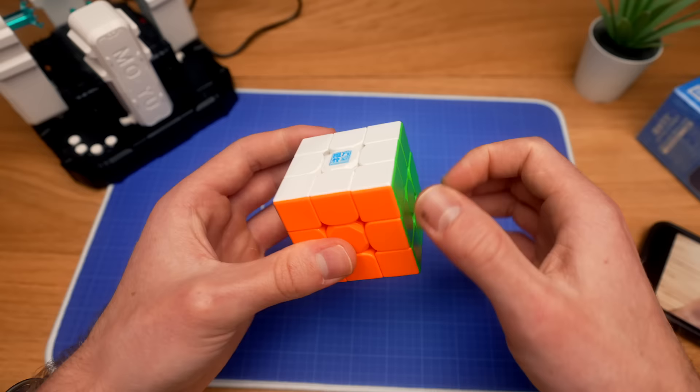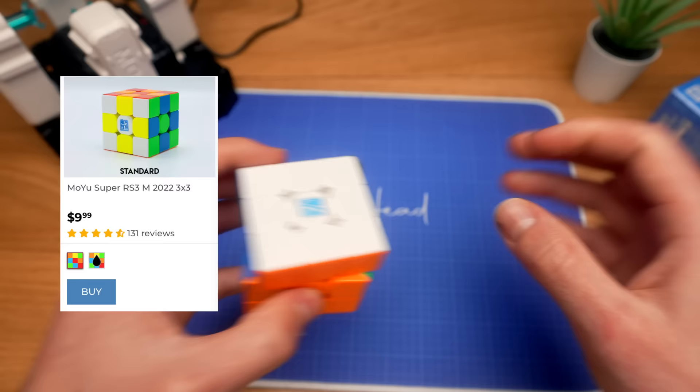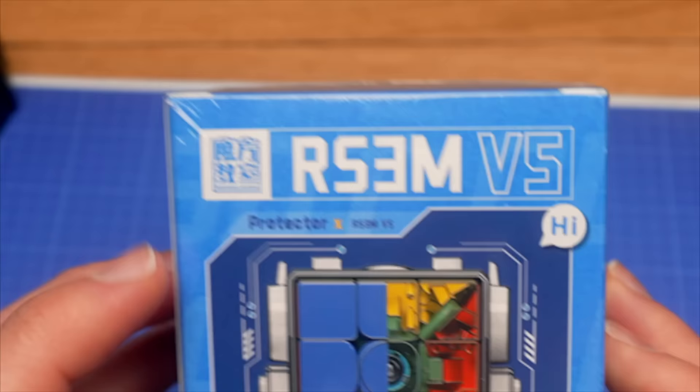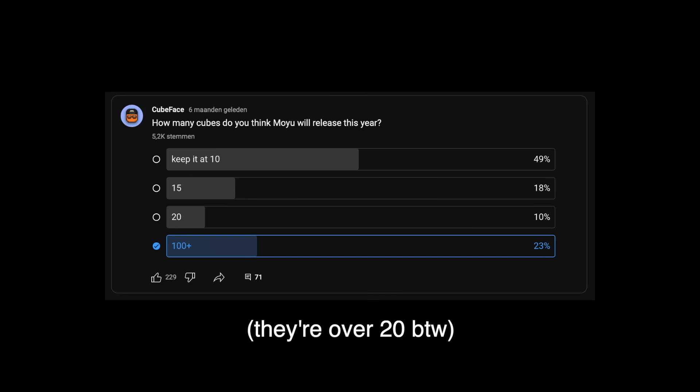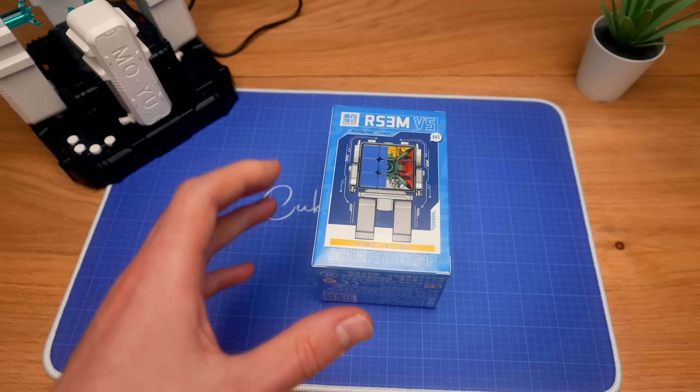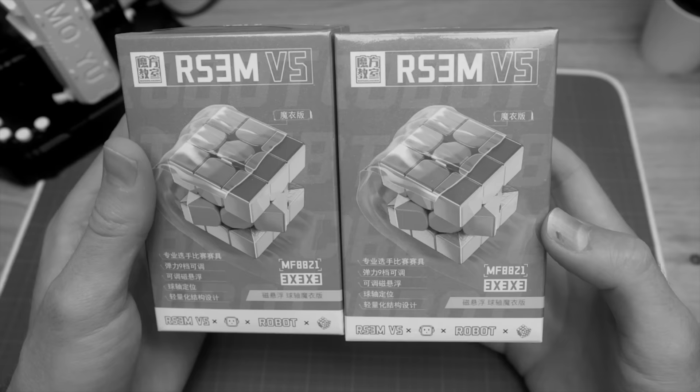By the way, the RS-3M got an upgrade to Super RS-3M just a few months ago. But now we have version 5. Because Moyo wants to release 100 cubes this year. And I have two versions of this cube. Although I do not know the difference.